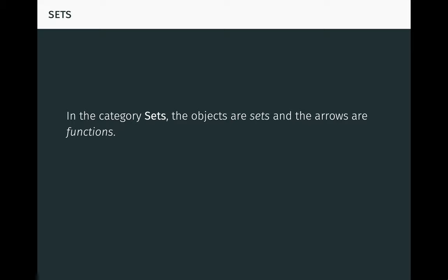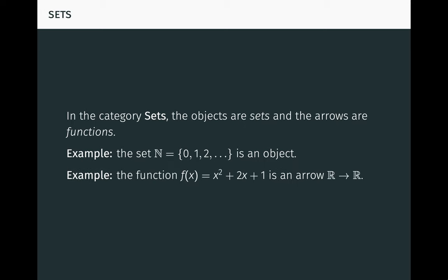In the category of sets, the objects are sets, and the arrows are functions between sets. For example, the set ℕ of natural numbers, consisting of 0, 1, 2, and so on, is an object in this category. The function f(x) = x² + 2x + 1 is an arrow, say from the real numbers to the real numbers.